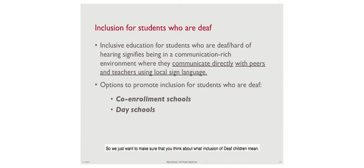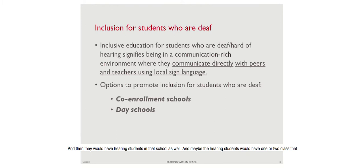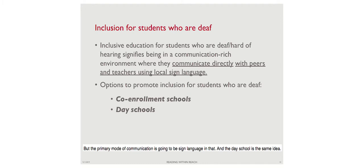We need to think carefully about what inclusion of deaf children means. Options can include co-enrollment or day schools. A co-enrollment school could be bilingual - most of the day taught directly in sign language, with hearing students also in the school. Hearing students may have one or two oral classes separately, with an interpreter available. The primary mode of communication would be sign language throughout the day. The day school serves the same idea but is more specifically for deaf students.